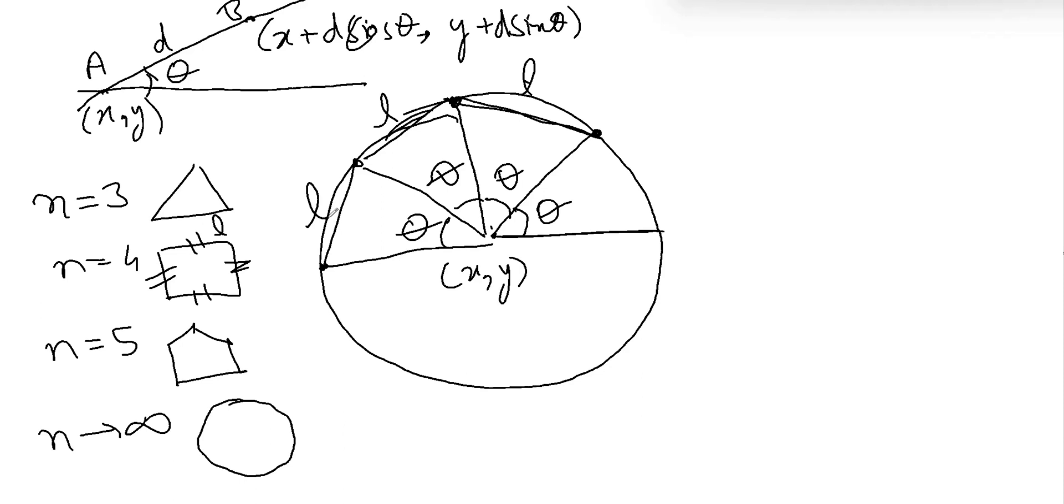Now using the previous formula, what we found is if the center is (x, y), then this becomes x plus... x plus, let's say the radius is r, x plus r cos theta, y plus r sin theta.